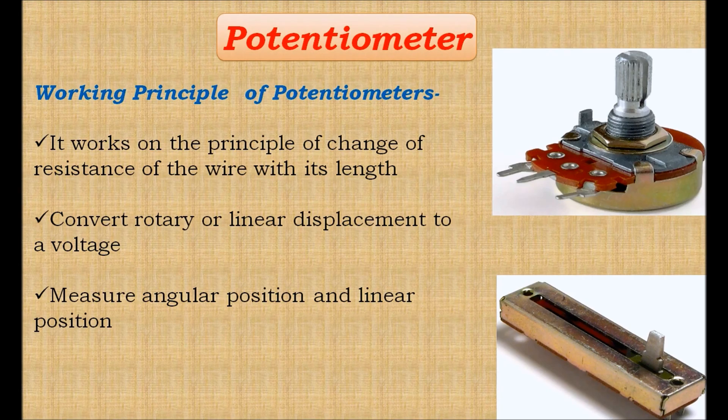The potentiometer is an electrical type of transducer or sensor and is a resistive type because it works on the principle of change of resistance of the wire with its length. Potentiometers convert rotary or linear displacement to a voltage. The resistance of the wire is directly proportional to the length of the wire.